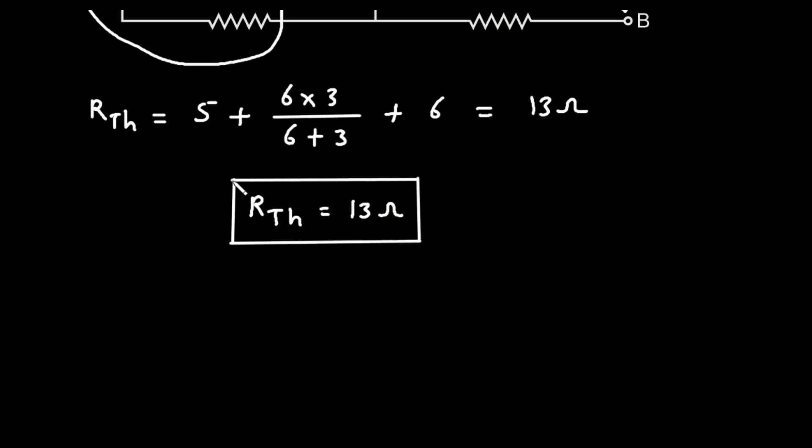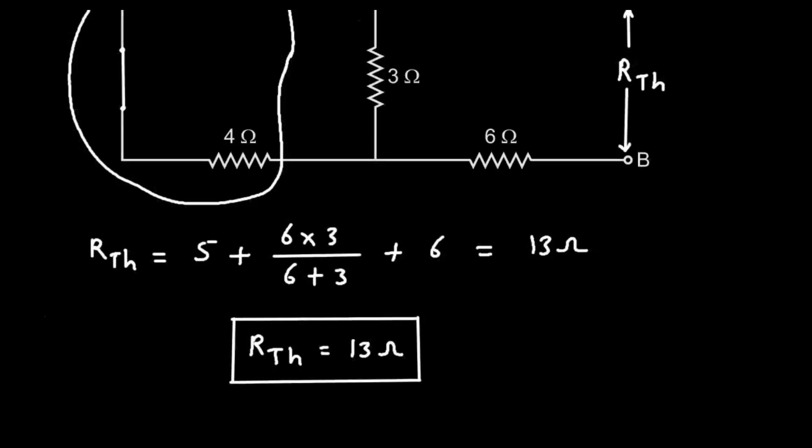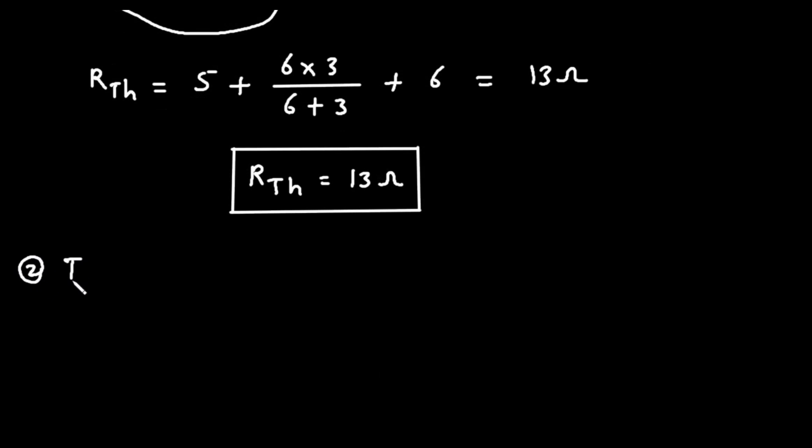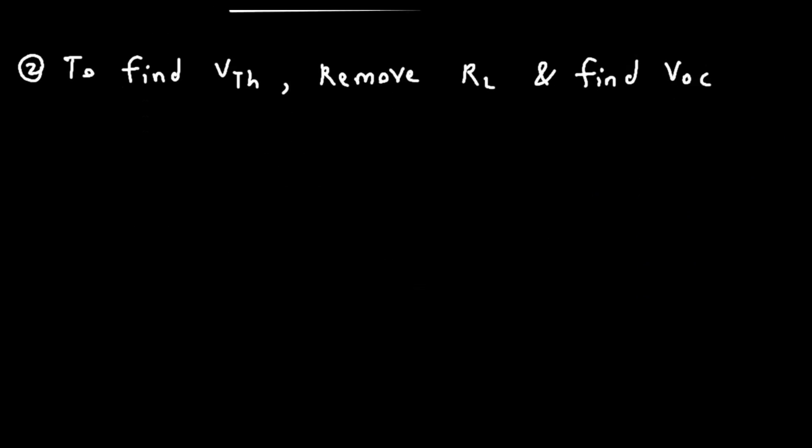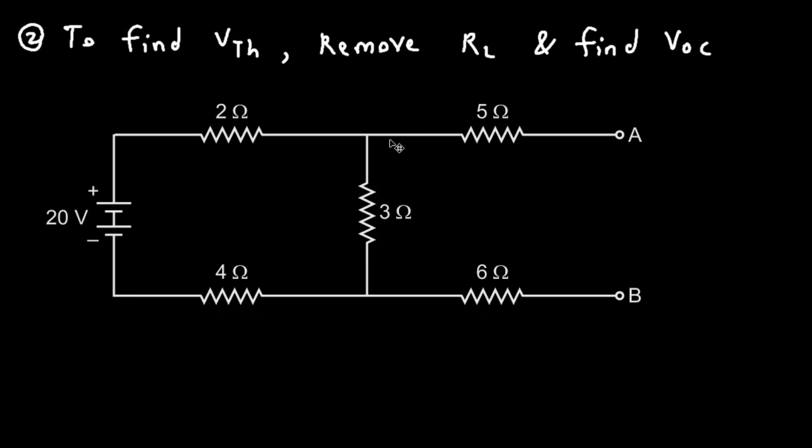Now next step is to find the value of VTH. Step number 2: to find VTH, we have to remove RL and find VOC, we have to find open circuit voltage VOC. Now VOC will be equal to VTH. So here for this circuit, this will be our VTH, this is plus and this is minus.